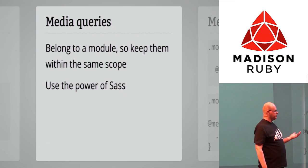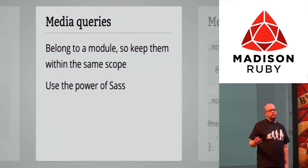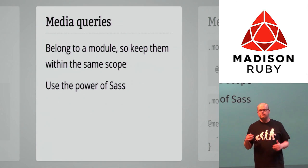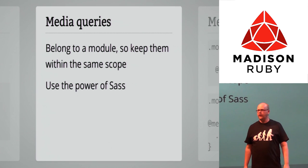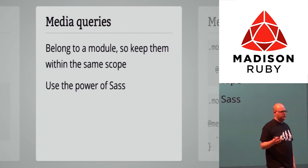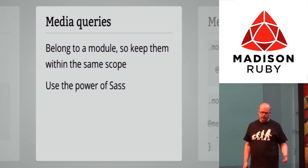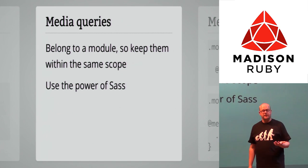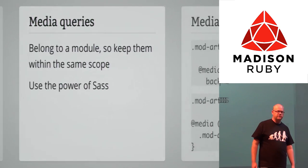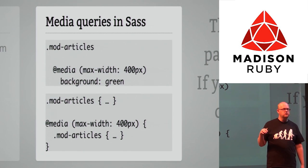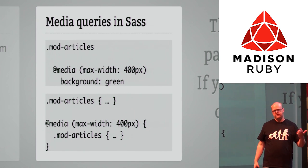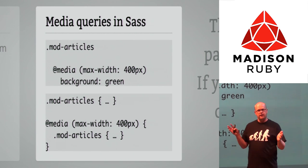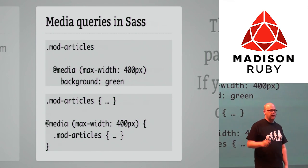Media queries allow you to apply styling based on min-width, max-width, min-height, max-height of your browser viewport — so you can change styling for mobile or do mobile-first development. They belong to a module, so keep them in the same scope. That's impossible with plain CSS, but Sass lets you nest the media query inside your module and handles the output. In your Sass it's all nice and tidy, tied together, and Sass handles it for you.